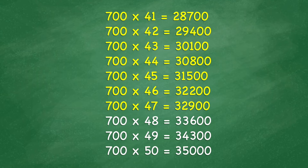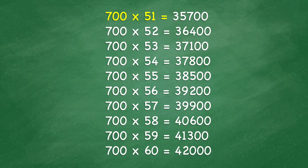700 times 48 equals 33,600. 700 times 49 equals 34,300. 700 times 50 equals 35,000. 700 times 51 equals 35,700. 700 times 52 equals 36,400. 700 times 53 equals 37,100. 700 times 54 equals 37,800. 700 times 55 equals 38,500.